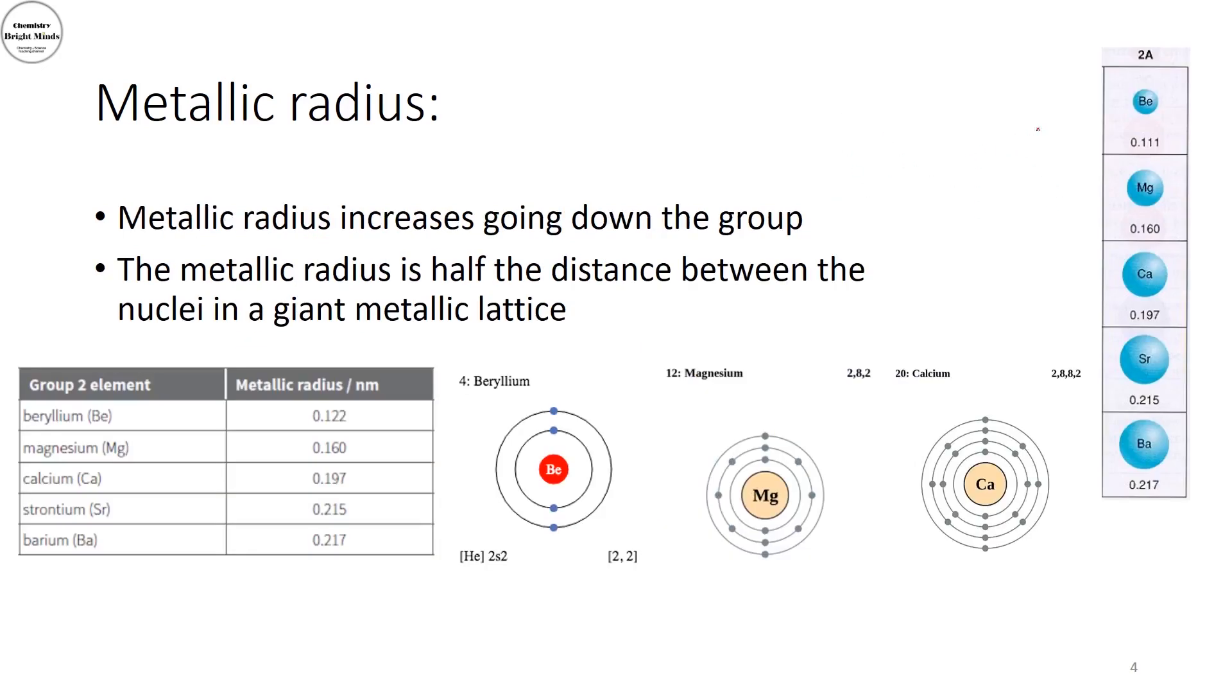Now, moving to the metallic radius trend down group 2, you could see that I'm increasing the atomic radius. And the reason behind that, because moving down the group, I'm increasing the number of shells. So in here, I have the second shell. Valence electrons are located in the second shell. In here, I'm increasing the third, then the fourth. So I'm increasing the distance between the positive nucleus and the valence electrons.